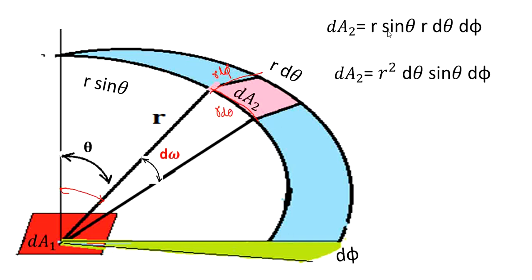dA_2 you can write, r d theta, r d theta d phi. Therefore, dA_2 is equal to r squared d theta sin theta d phi.